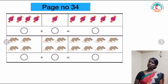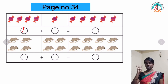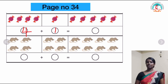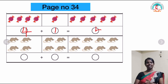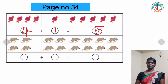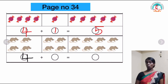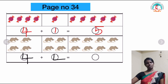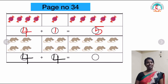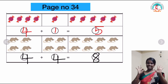First one. In the first box we have 4 chocolates. In the second box we have only 1 chocolate. When I add together I got 5 chocolates. In the second one, in the first box we have 4 rats, in the second box 4 rats. When I add together I got 8 rats.